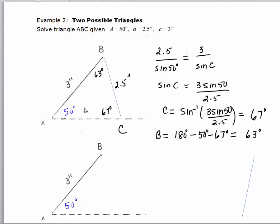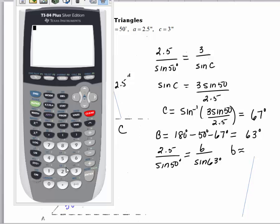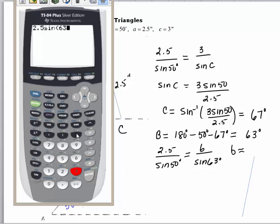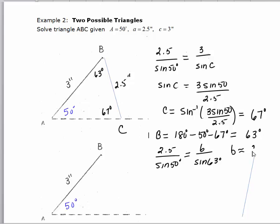Now we can find side B by using the Law of Sines. 2.5 is to the sine of 50 as side B is to the sine of 63. Solving by multiplying the cross products and dividing, we get B approximately equal to 2.5 times the sine of 63 degrees divided by the sine of 50 degrees. Rounding to the nearest tenth, B is approximately 2.9 inches.